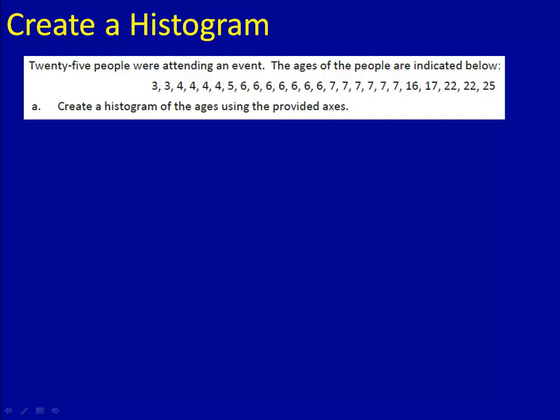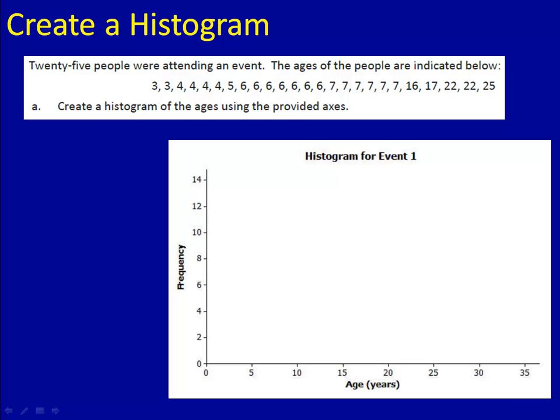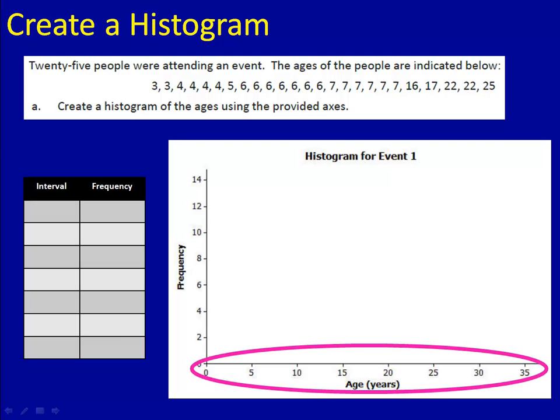We have 25 people who are attending an event. The ages of each of those people is recorded below. So we want to create a histogram using the axes that are given to us. So here is the graph. We have the x-axis on the bottom, that is the age of the person in years. We have the frequency on the y-axis on the side, and frequency is simply how many times it happened. We are going to create a frequency table, and then construct the bars on our graph. At the bottom,